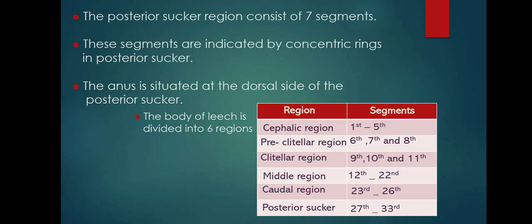The body of leeches is divided into six regions: cephalic region (segments 1–5), pre-clitellar region (segments 6–8), clitellar region (segments 9–11), middle region (segments 12–22), quarter region (segments 23–26), and posterior sucker (segments 27–33).